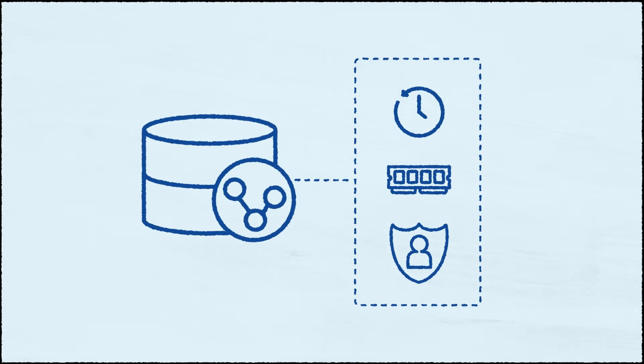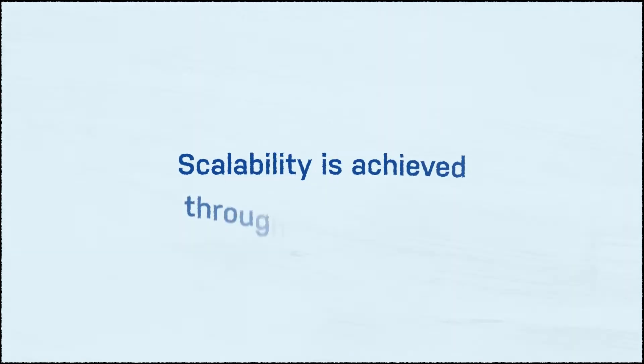Fabric makes all this transparent because it doesn't make assumptions about schema or store layout. In the graph model, scalability is achieved through composition.